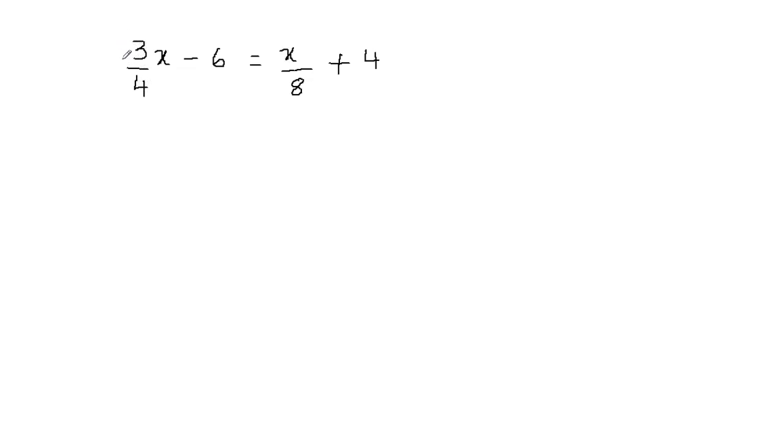If I multiply this by 4, I can eliminate the 4, and if I multiply this by 8, I can eliminate the 8. But I cannot do that because whatever I do to one side, I have to do the same to the other side. I cannot multiply this side by 4 and then this side by 8.